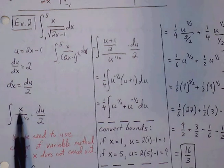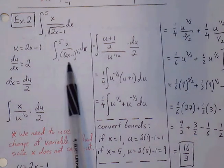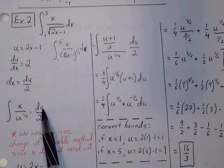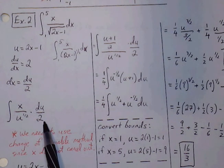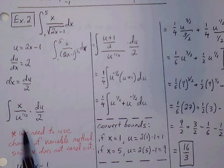However, once we make our substitution, we have u to the 1 half, x doesn't cancel out, and we have du over 2. We do need to use change of variable method since x doesn't cancel out.